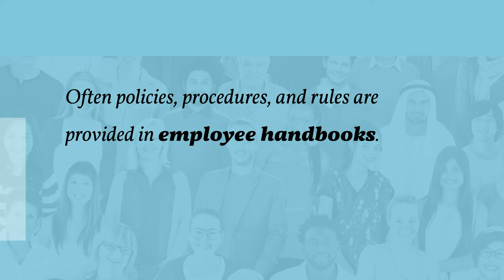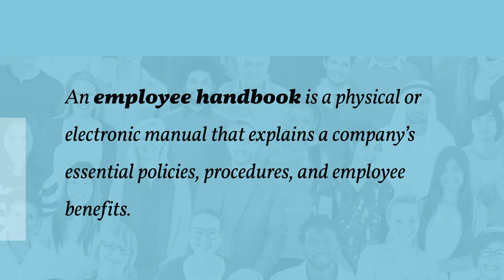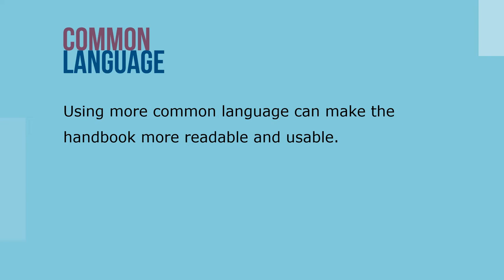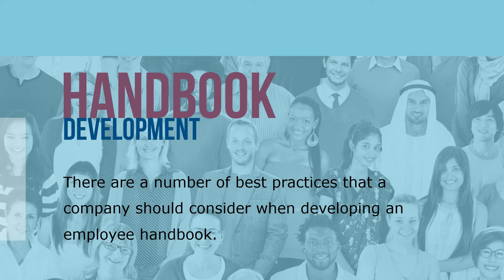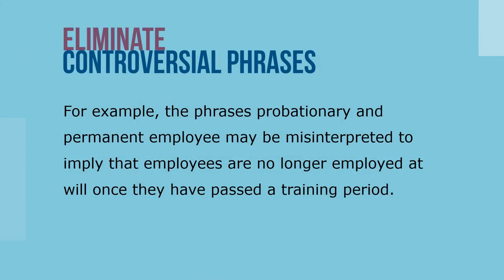Policies, procedures, and rules are often provided in employee handbooks. An employee handbook is a physical or electronic manual that explains a company's essential policies, procedures, and employee benefits. Handbooks are sometimes written in formal, legalistic fashions but are more effective when written in language employees can easily understand. Best practices for developing an employee handbook include: eliminating controversial phrases — for example, the phrases 'probationary' and 'permanent employee' may imply that employees are no longer at will once they've passed a training period; a more appropriate phrase is 'regular employee.'